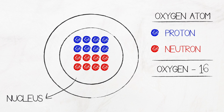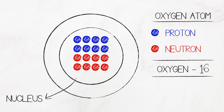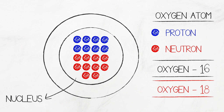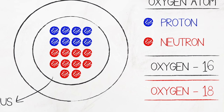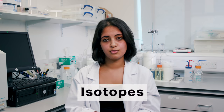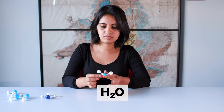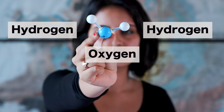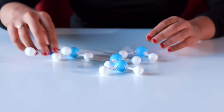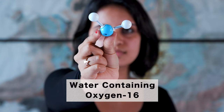But about two in every thousand oxygen atoms has 10 neutrons, giving 18 particles in the nucleus. They're still oxygen because they still have eight protons in their nucleus — they're just a bit heavier. So we call these oxygen-18. These atoms of the same element with slightly different masses are known as isotopes. As water molecules have the chemical formula H₂O, we know that they contain one atom of oxygen and two atoms of hydrogen. Because every water molecule contains this oxygen atom, two in every thousand water molecules will have that heavier oxygen-18.